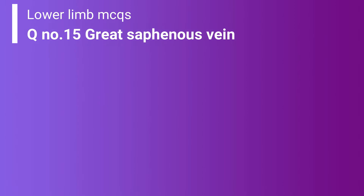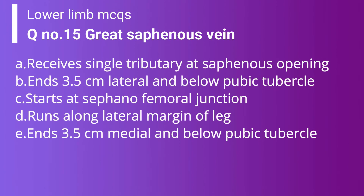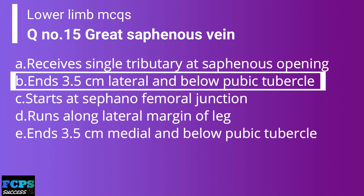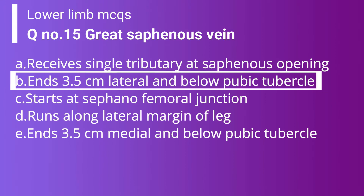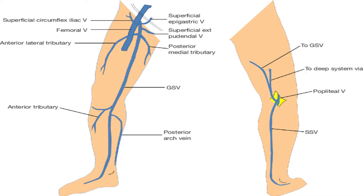Question 15: Regarding the great saphenous vein, which is true? Option A: Receives a single tributary at the saphenous opening. Option B: Ends 3.5 cm lateral and below the pubic tubercle. Option C: Starts at the saphenofemoral junction. Option D: Runs along the lateral margin of the leg. Option E: Ends 3.5 cm medial and below the pubic tubercle. The correct answer is Option B — it ends 3.5 cm lateral and below the pubic tubercle. The other options are false: it receives multiple tributaries at the saphenous opening, it ends at the saphenofemoral junction, and it runs along the medial margin of the leg.